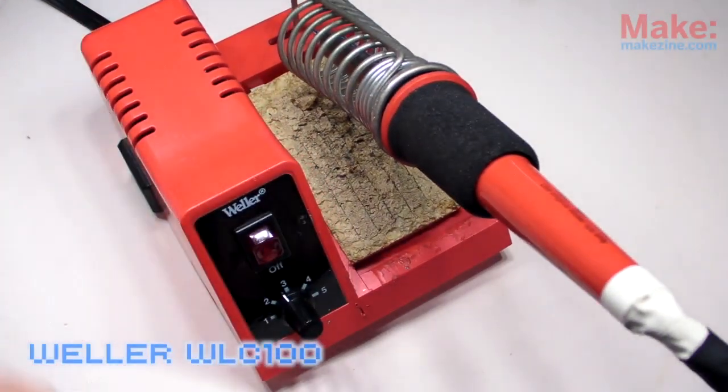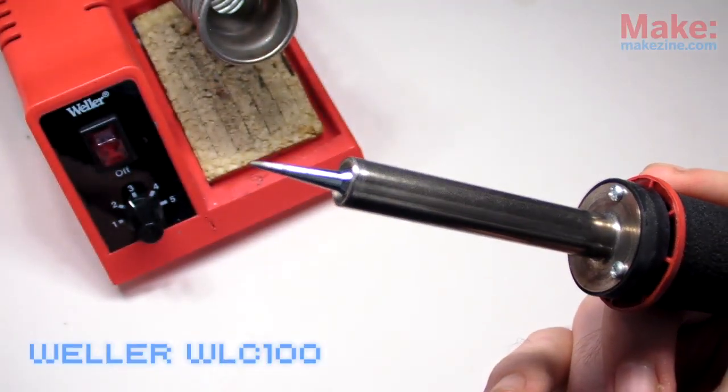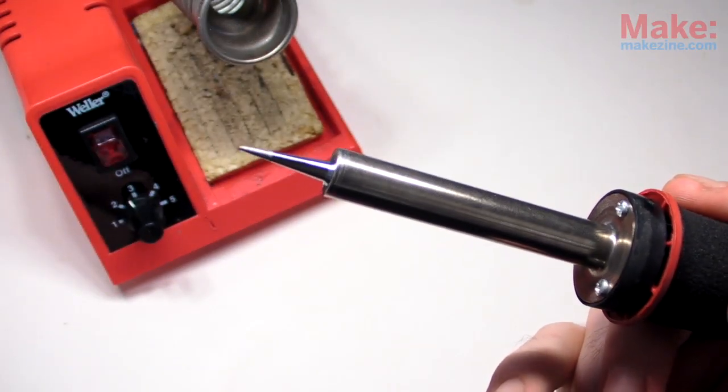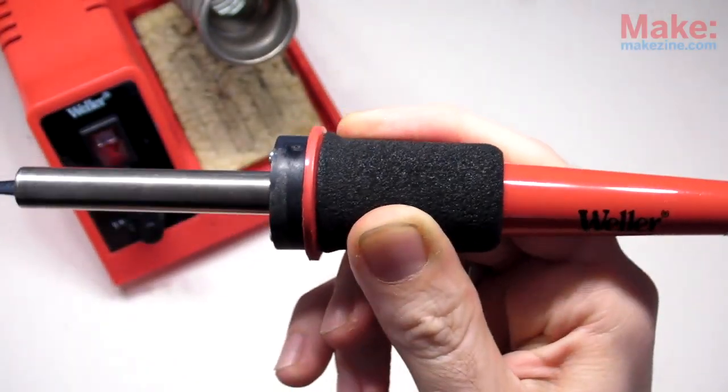If you want something with a few extra frills, a Weller WLC100 adjustable soldering station goes for around $40, and comes with a good coil stand, cleaning sponge, and a nice cushy grip.